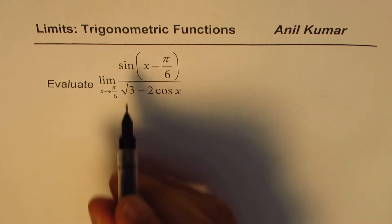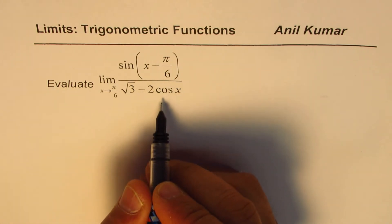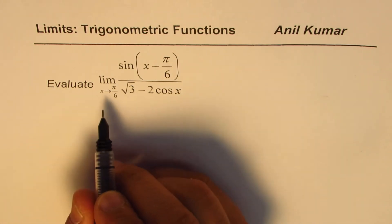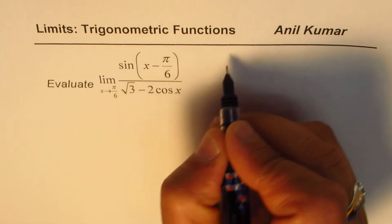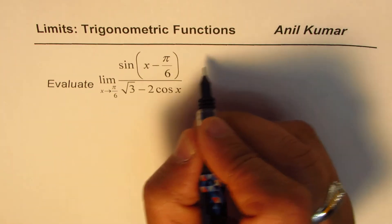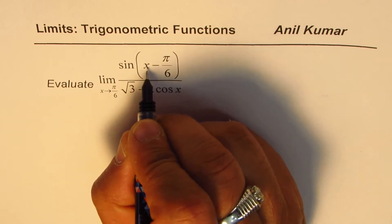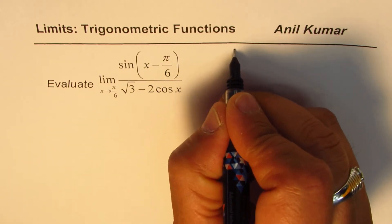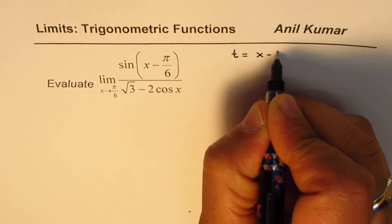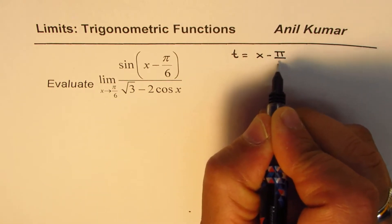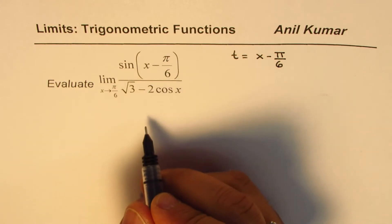To solve such a question, we need to substitute, simplify, and then evaluate the limit. The substitution we will make is: let t = x − π/6.